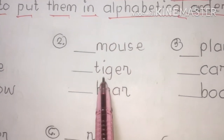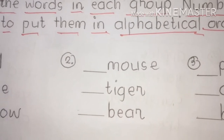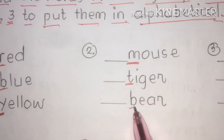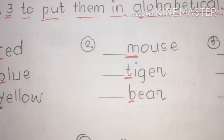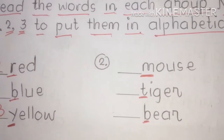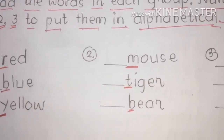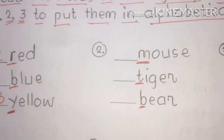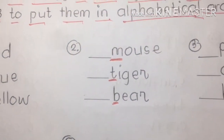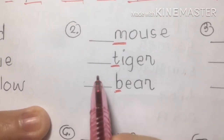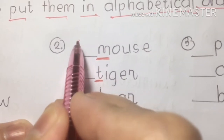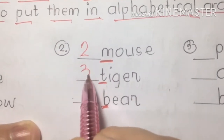Number two: mouse, tiger, bear — names of animals. Underline the initial sounds first. If the first letters are different, that's good. If the same, proceed to the second or third letter. The answer: bear is first because B comes first, mouse is second — M, and tiger is third — T. So: bear, mouse, tiger.